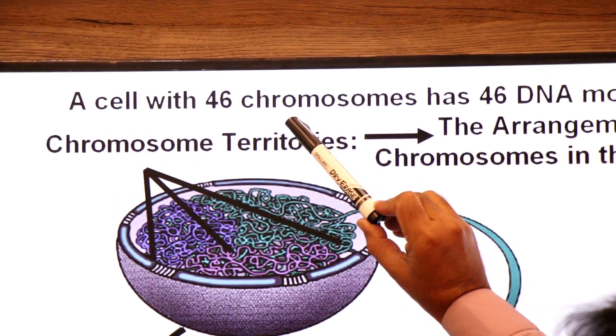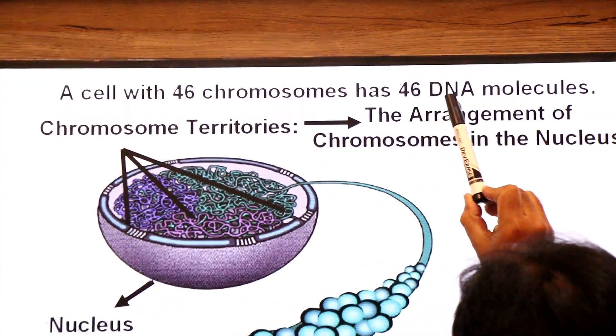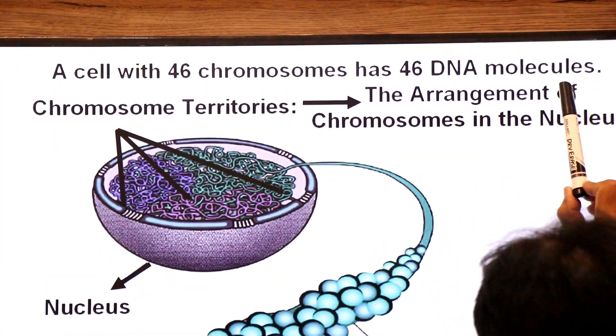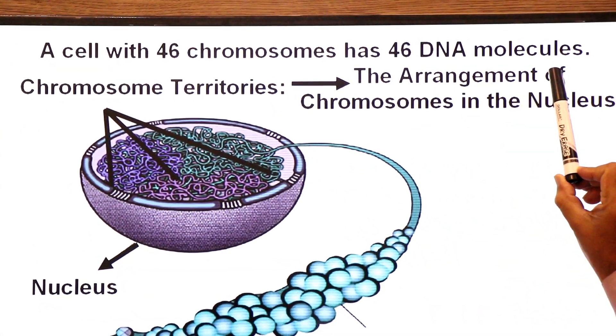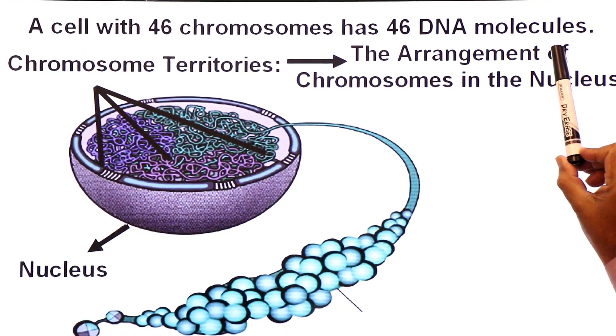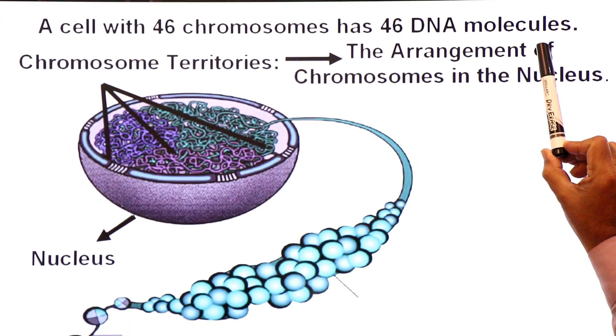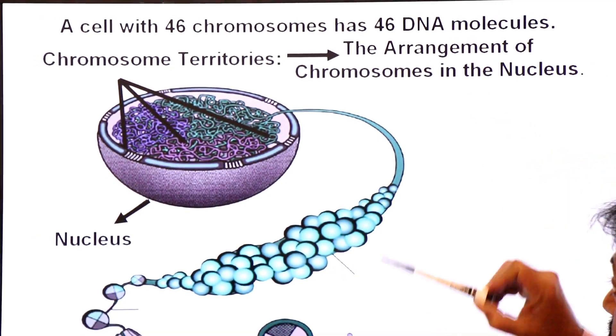A cell with 46 chromosomes has 46 DNA molecules, because one chromosome has one DNA molecule from one telomere to another telomere.